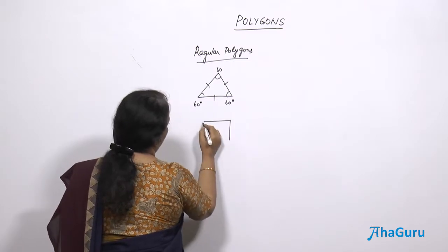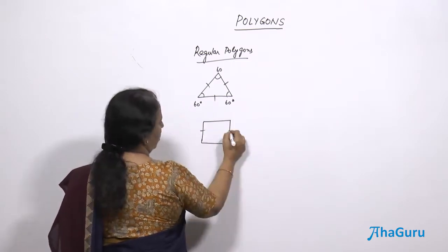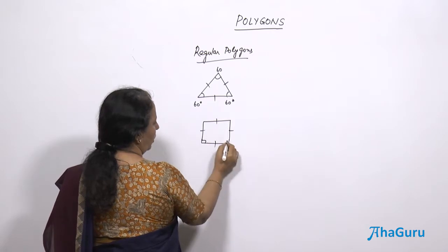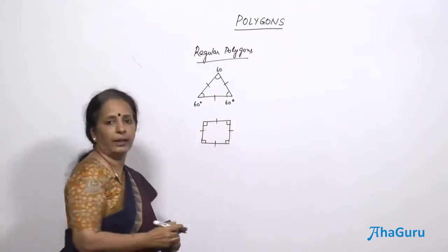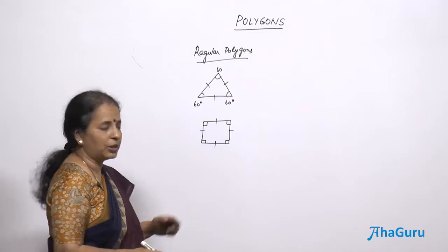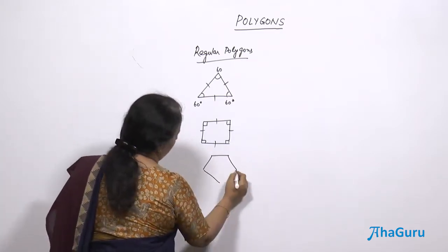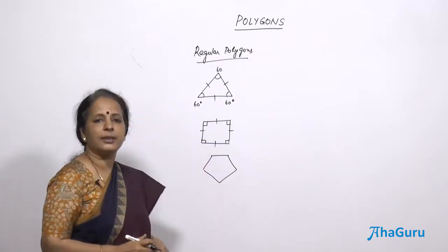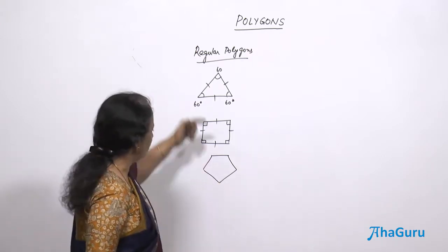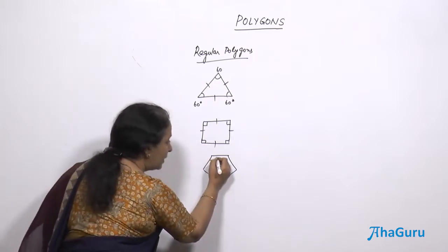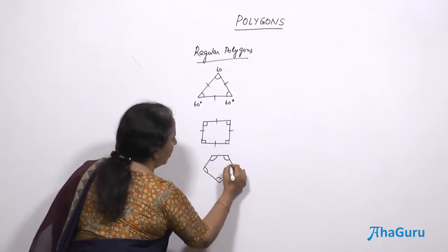If I say a regular quadrilateral is a square, all the four sides are equal and all the four angles are also equal, each being 90 degrees. With this logic, if I have a pentagon and if I say this is regular, what does that mean? The same logic holds good — all angles are equal and all sides are equal.